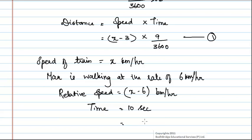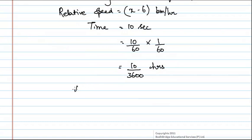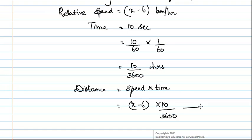To convert it into hours, we have to divide it by 60 twice. We will get 10 by 3600 hours. By using the formula distance equals speed into time, we will get speed as x minus 6 into time as 10 by 3600. Consider this as second equation.